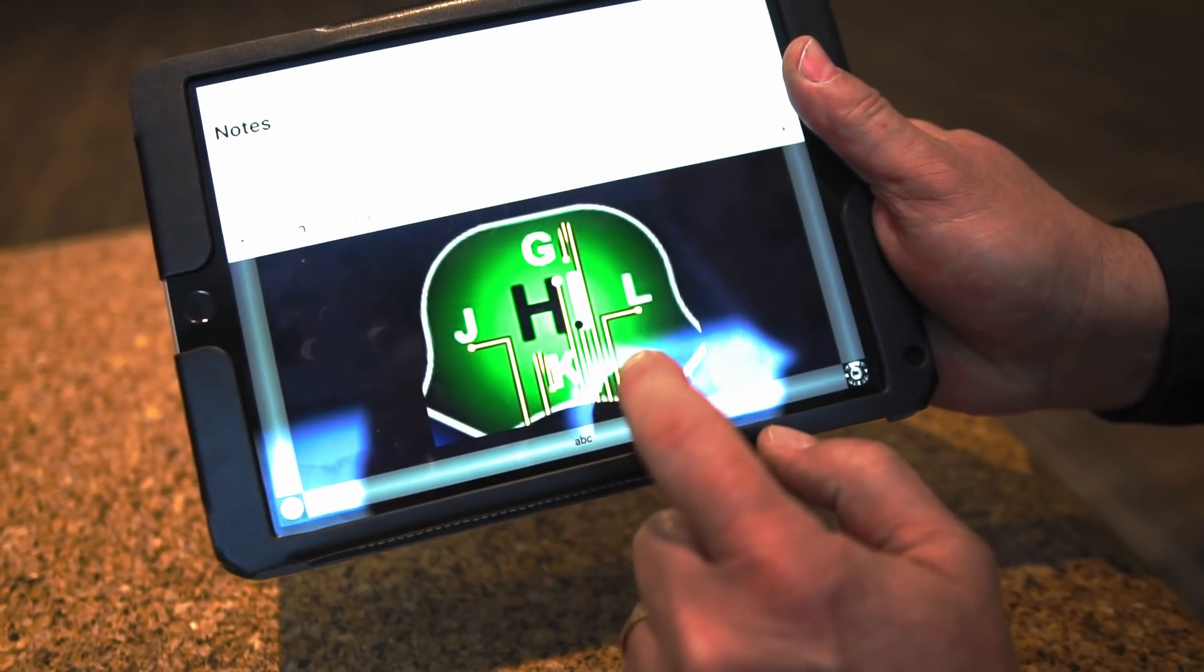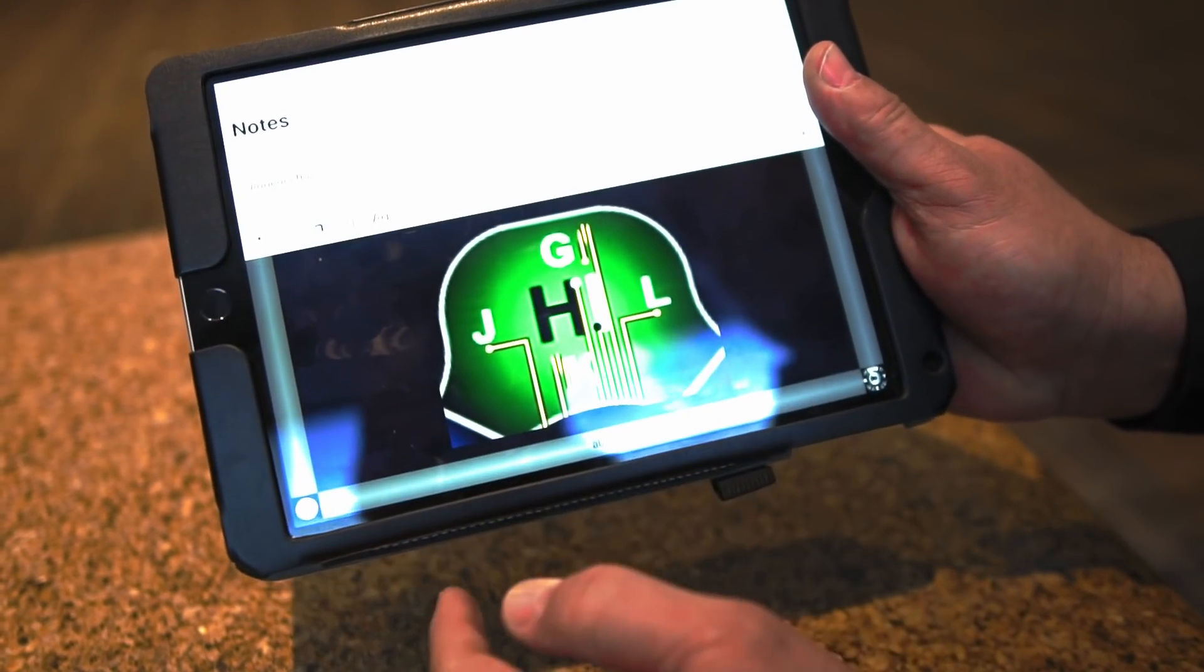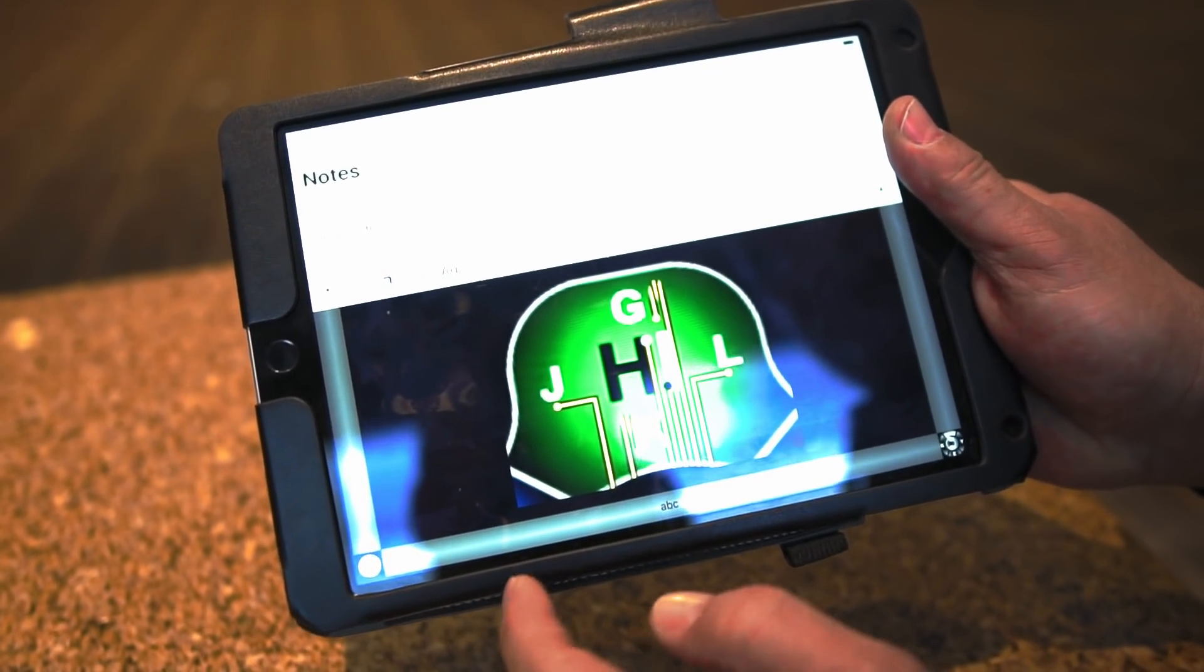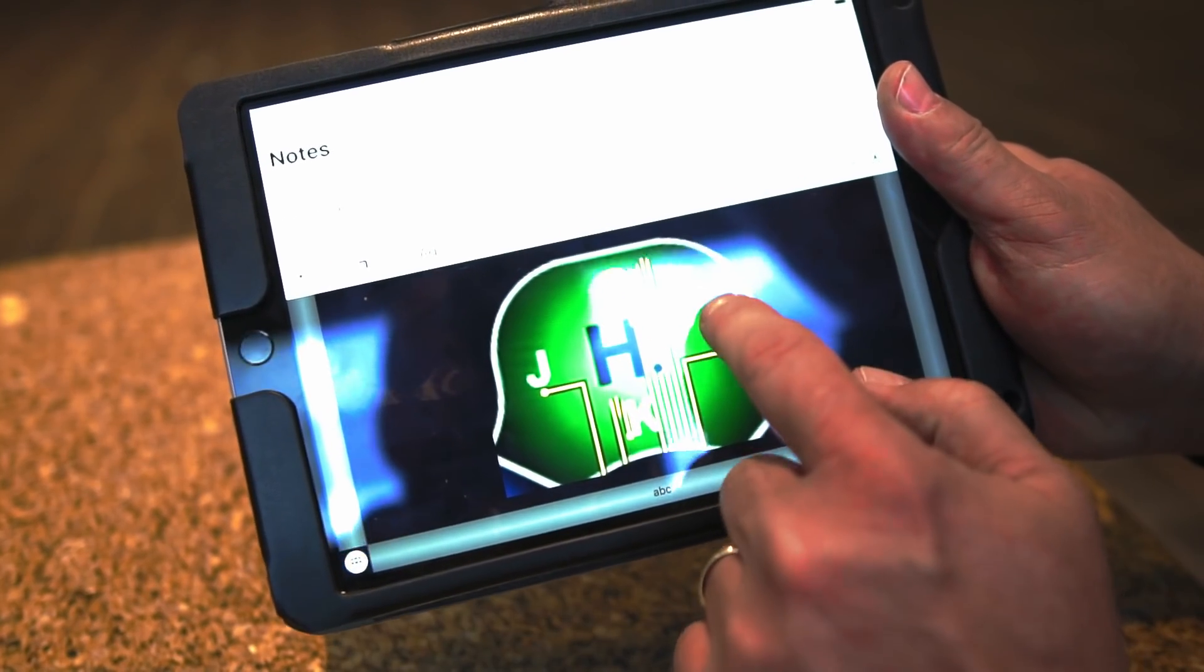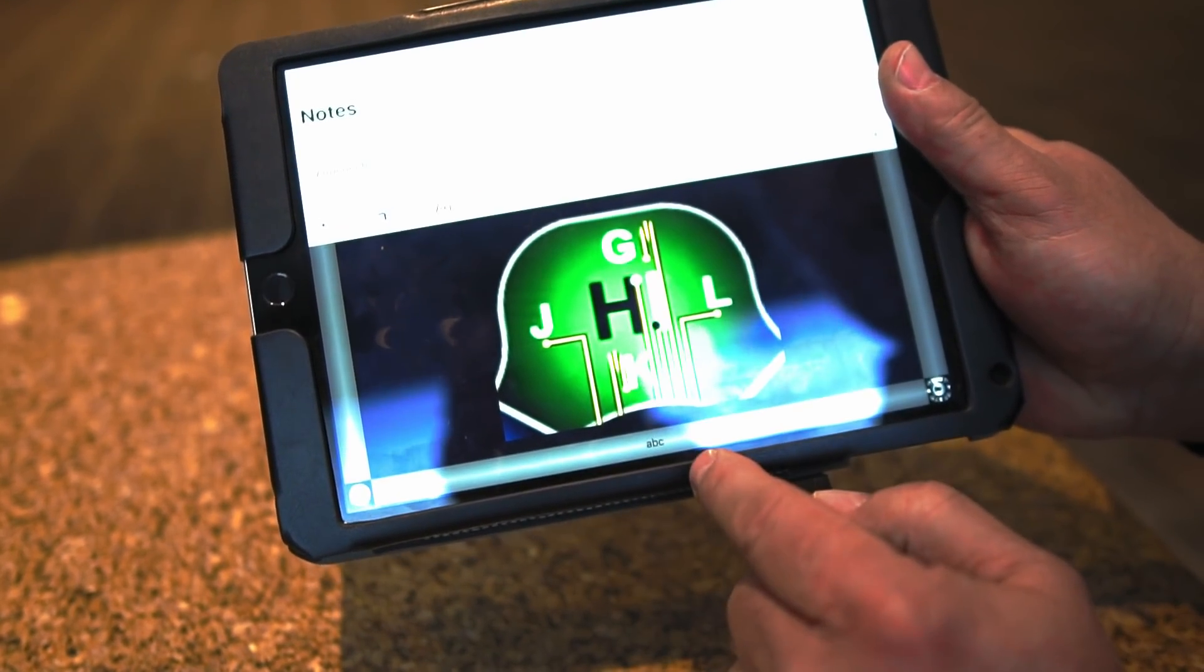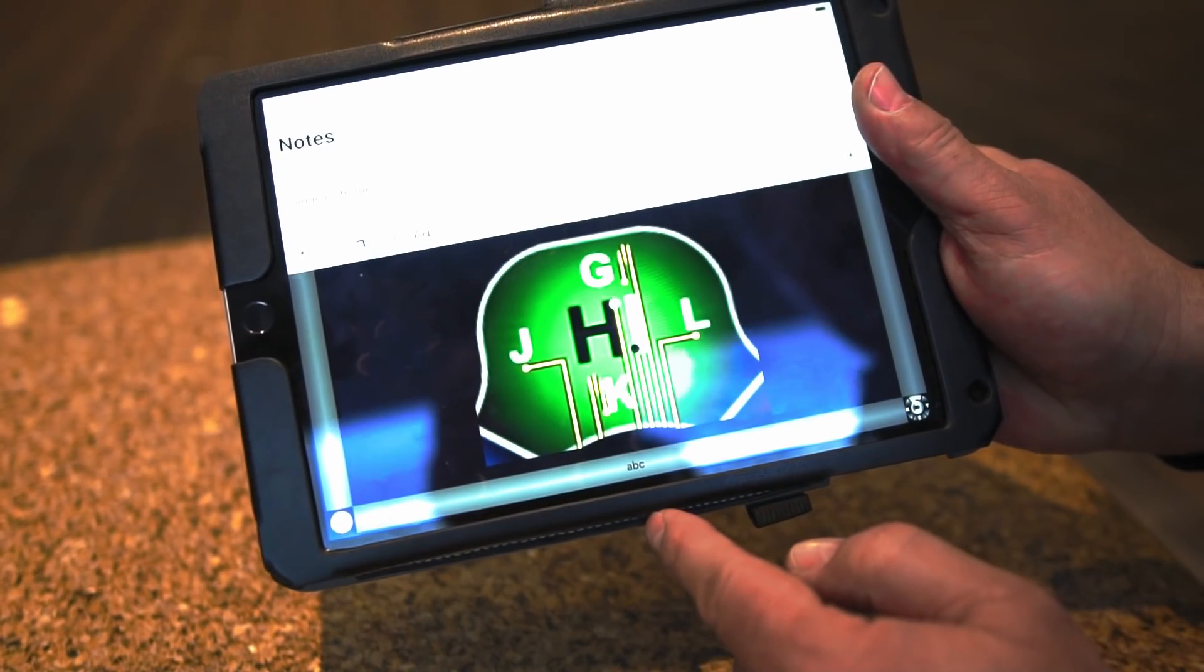Likewise, J would be a slide up then left, and L would be a slide up then right. The G is a long slide up and then you come back. And K is a short slide up and come back.